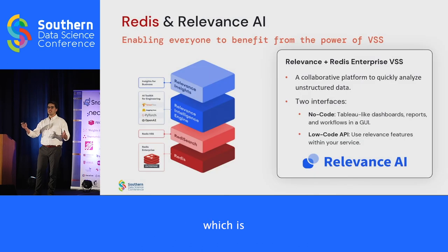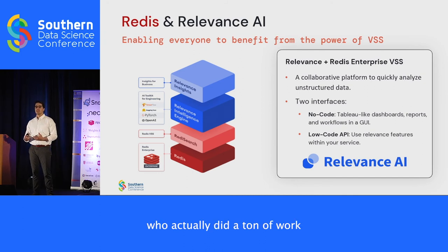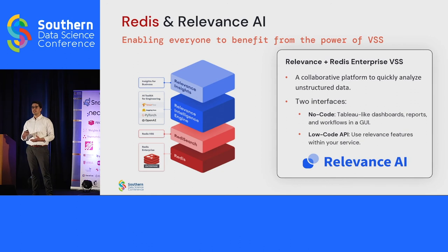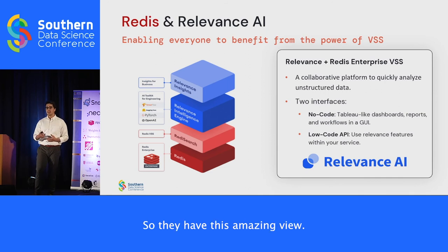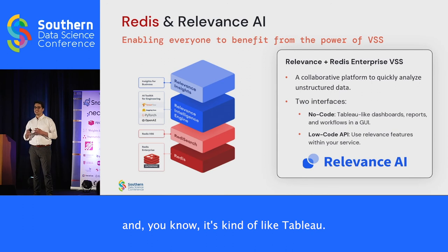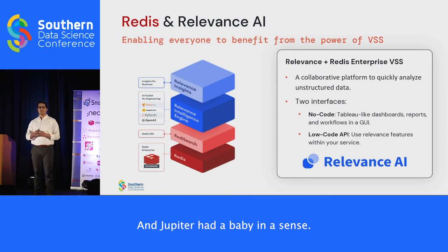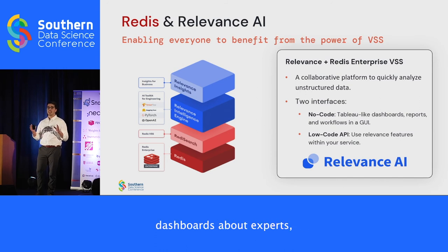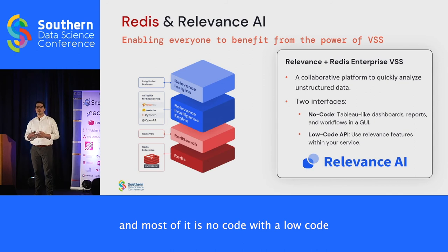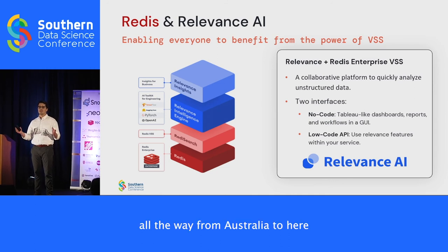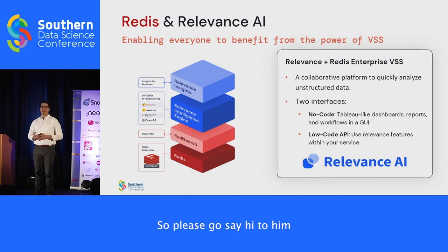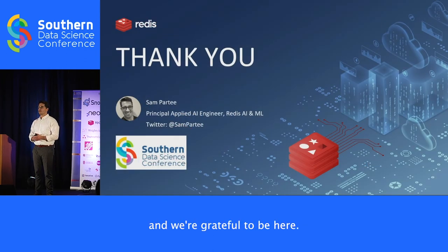Lastly, we have a partner — Relevance AI — who built an entire platform on top of our vector search capability, enabling users who aren't data scientists or data engineers to benefit from vector similarity. They have an amazing GUI, kind of like Tableau and Jupyter had a baby — reporting functionality, observable dashboards about records, and mostly no-code with a low-code API option for ingest. CEO Jackie Coe flew all the way from Australia to be here and answer questions. Thank you to Mark and the Southern Data Science Conference — this has been a blast.